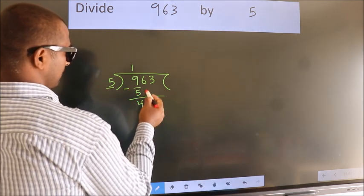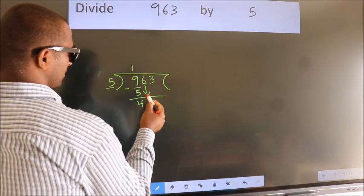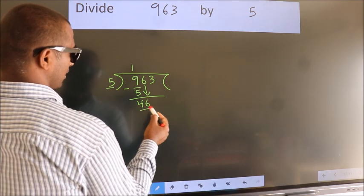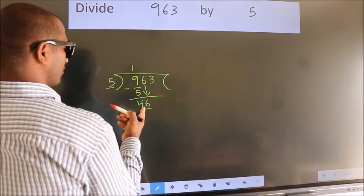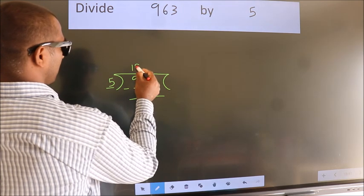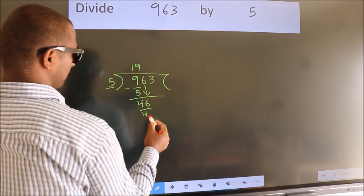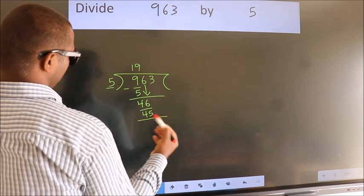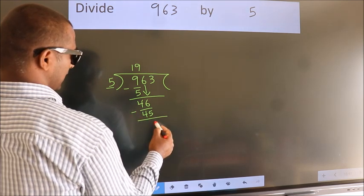After this, bring down the beside number. So 6 down. So 46. A number close to 46 in 5 table is 5 9s 45. Now we subtract. We get 1.